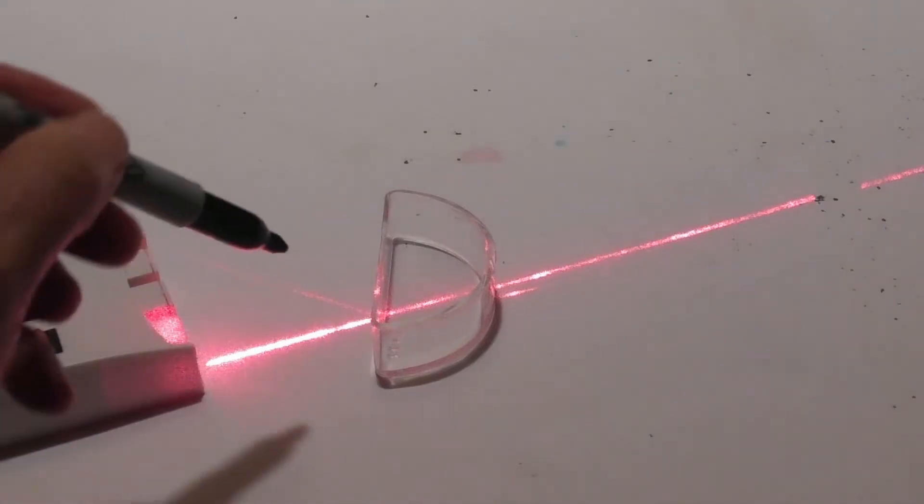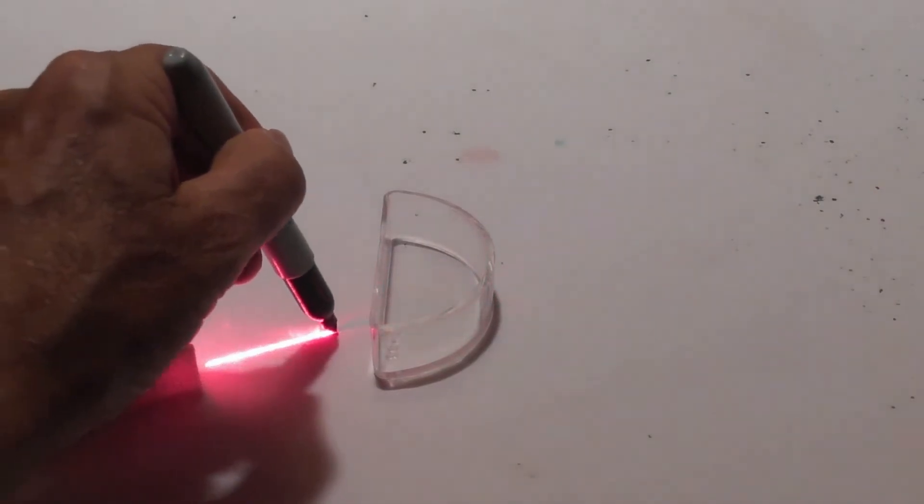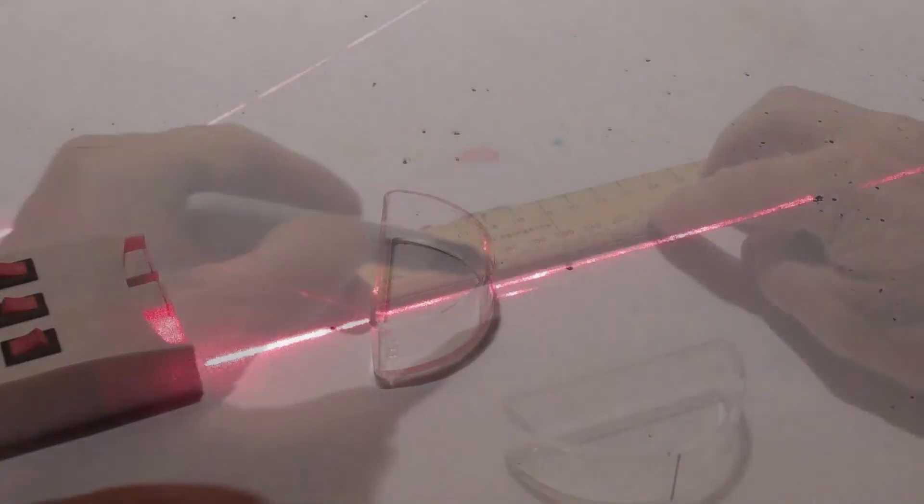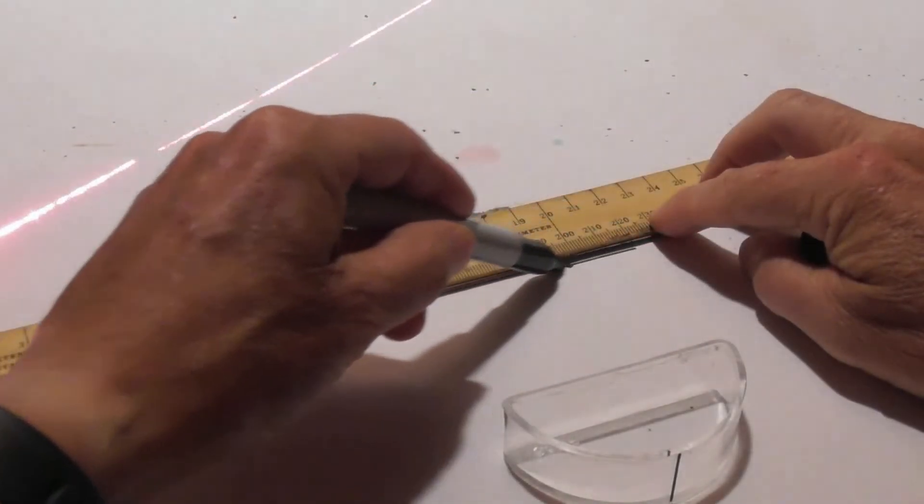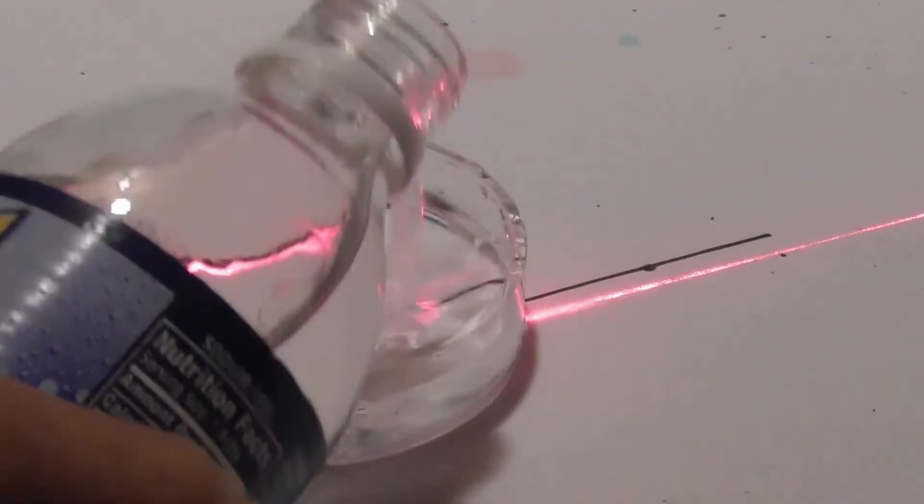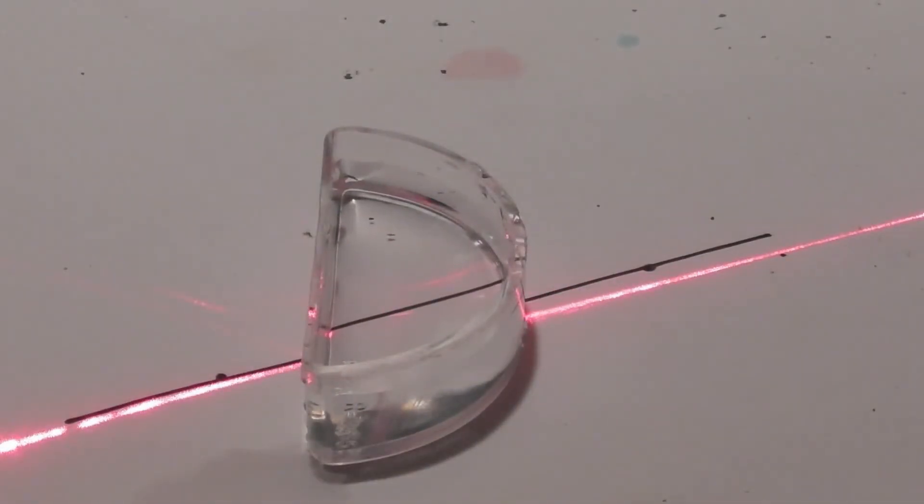Next I have liquid. First, I shine the light without the water inside. I mark it with my ruler and now when I add water, notice how the light bends. It slows down and bends.